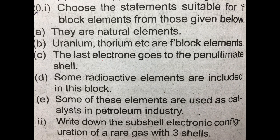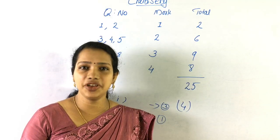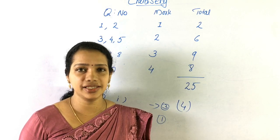In this question, the second question: write down the sub-shell electronic configuration of a rare gas with three shells. We are going to talk about three shells — one noble gas — and write the electronic configuration for that second question.